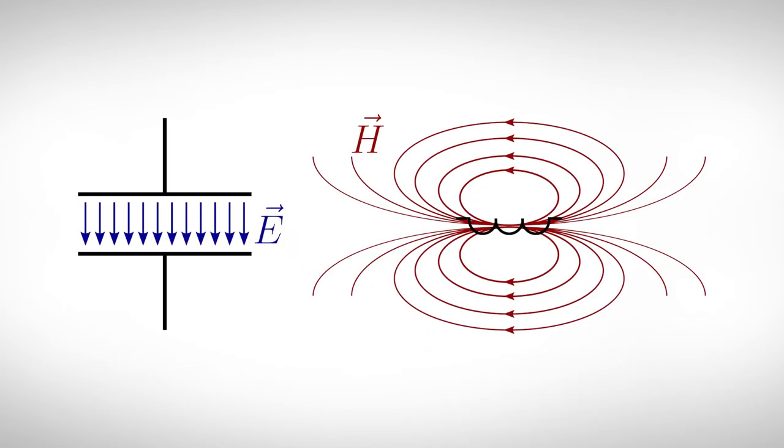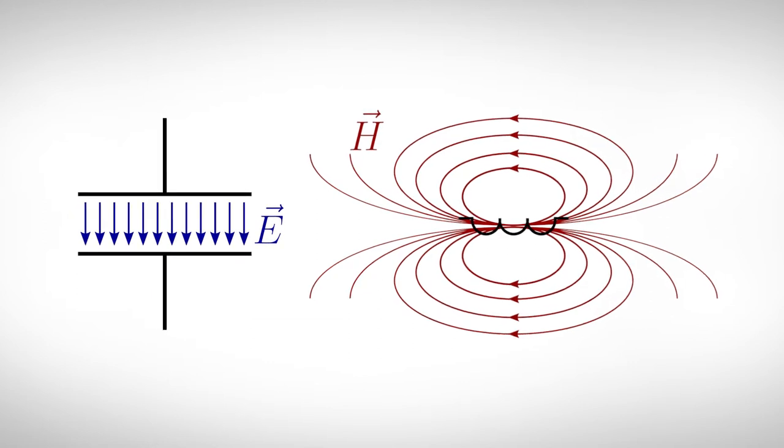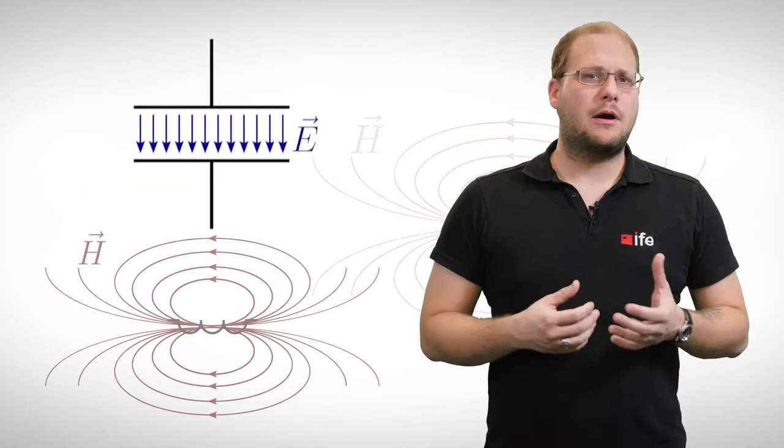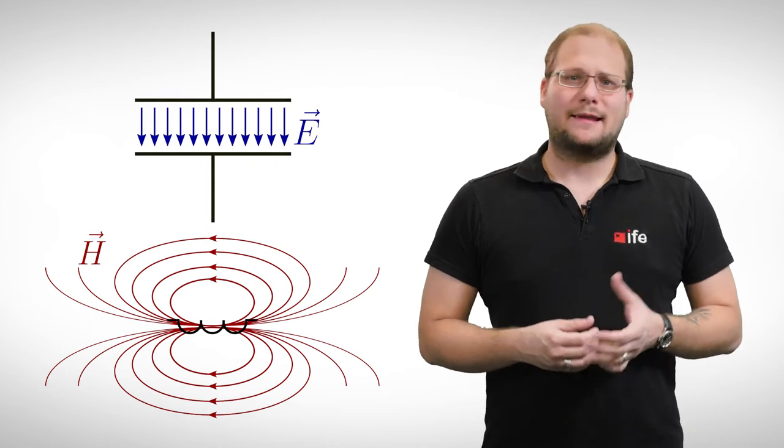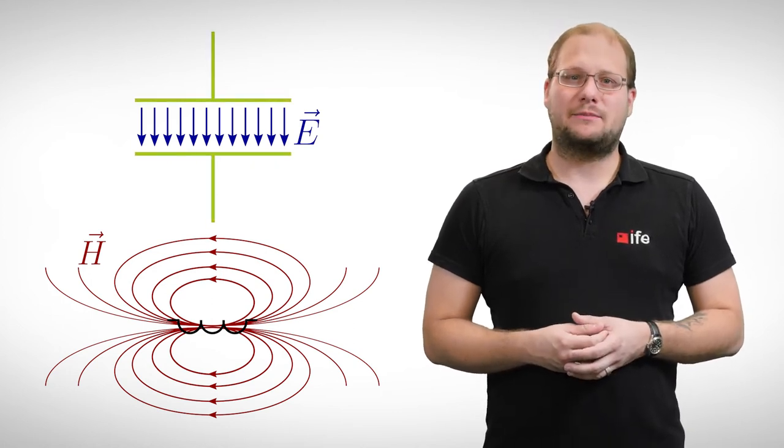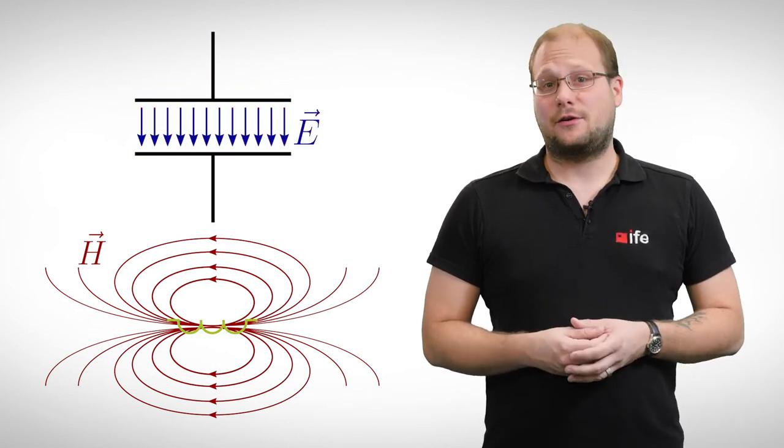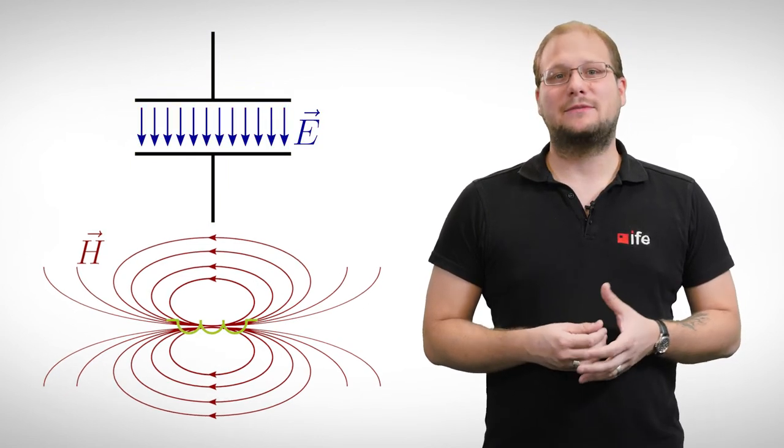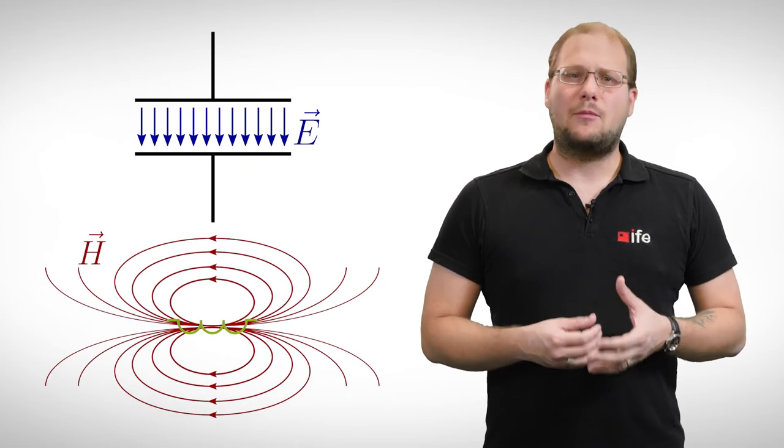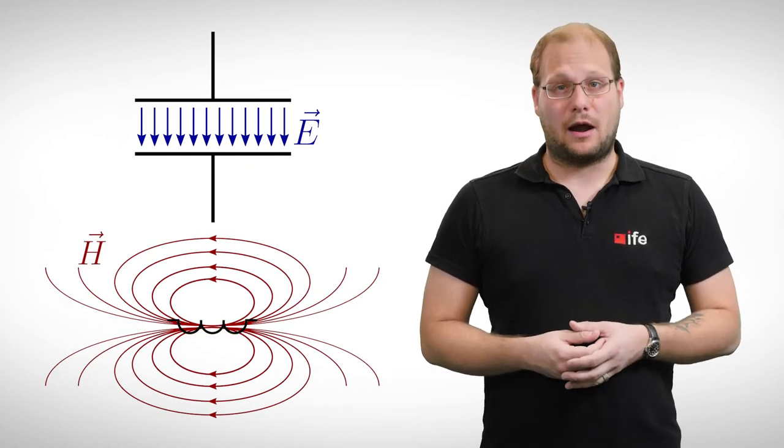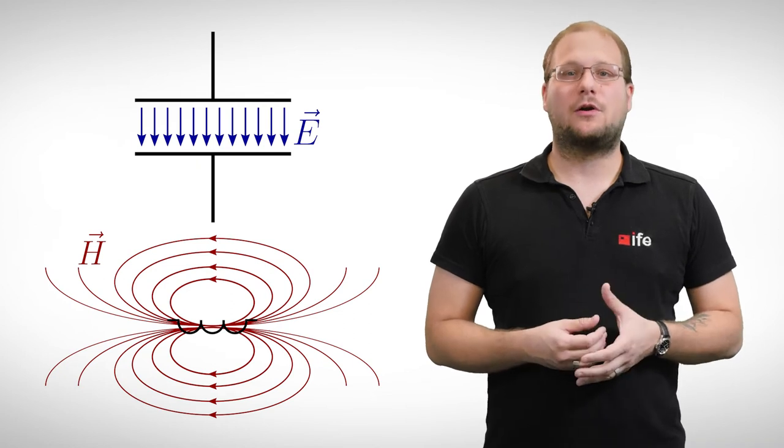Let's have a short recap of the capacitor and the inductor. Both elements are able to store energy. The capacitor can store it between its plates in form of an electric field. The inductor on the other hand stores energy in its magnetic field. How much energy can be stored depends on the value of the parts and the applied voltage or current.